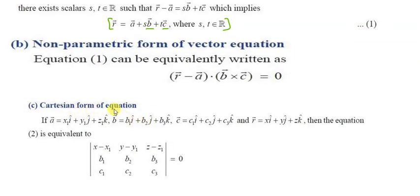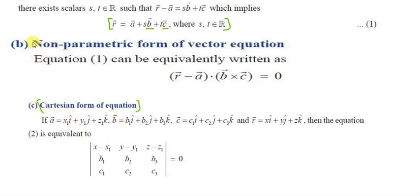For the Cartesian form of this equation, with one point and two vectors b and c, the determinant is: (x minus x1), (y minus y1), (z minus z1) in the first row; b1, b2, b3 in the second row; c1, c2, c3 in the third row, all equal to zero.